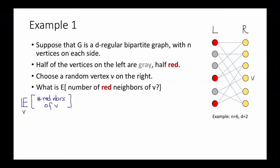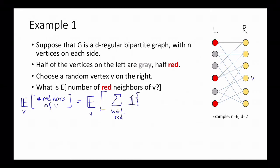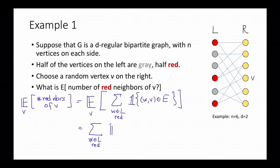Instead, we're going to use linearity of expectation. We'll write the number of red neighbors of V as a sum: the sum over all vertices W on the left-hand side that are red, of the indicator random variable which is 1 if W is a neighbor of V — shorthand: if edge WV is in E. Now we apply linearity of expectation, moving the expectation inside. The expected value of an indicator random variable is just the probability that the event occurs, so this becomes the sum over W in L that are red of the probability that WV is an edge.